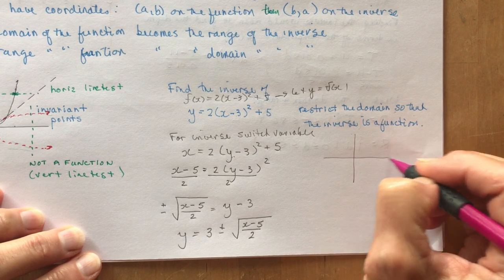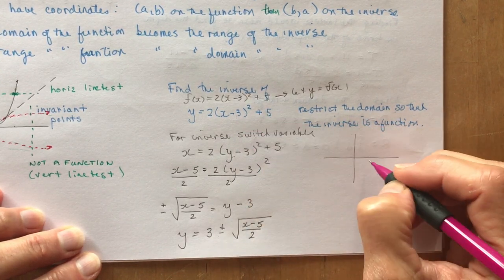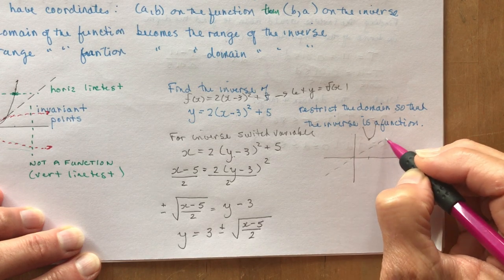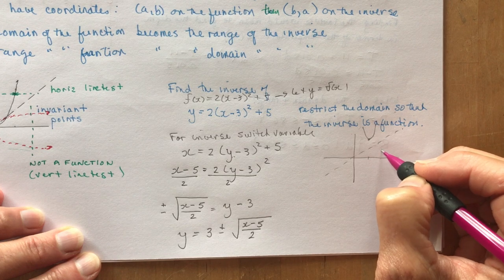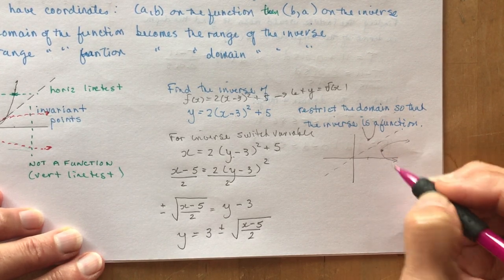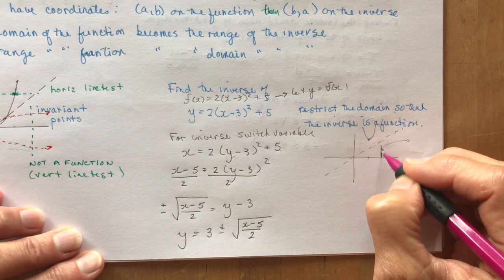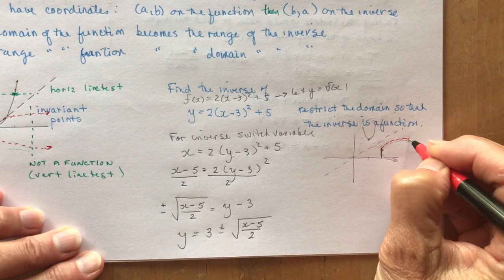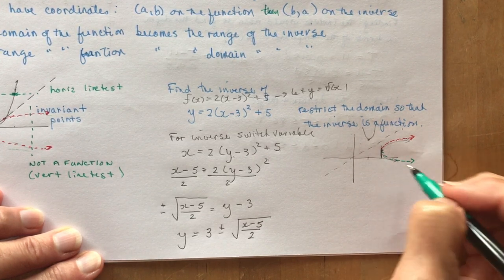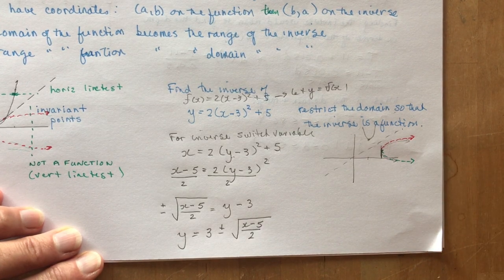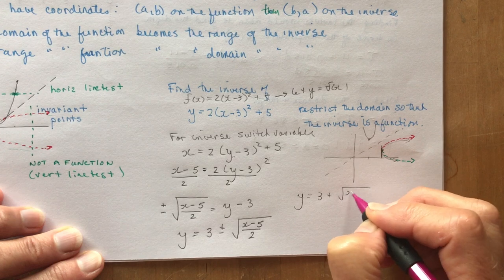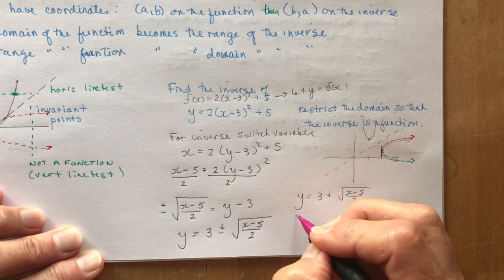If you were to sketch it really quickly, we would have started with something at (3, 5), and it's concave up like this. Then when I reflect it, this point (3, 5) becomes (5, 3), and we have it probably going this way. You can see it's not a function. Now in order to restrict the domain, which is what they're asking for, I need to know from here—because as soon as I leave the vertex, I have one arm going this way and the other branch going this way. If I can just talk about one of these branches of the parabola, it will be a function.